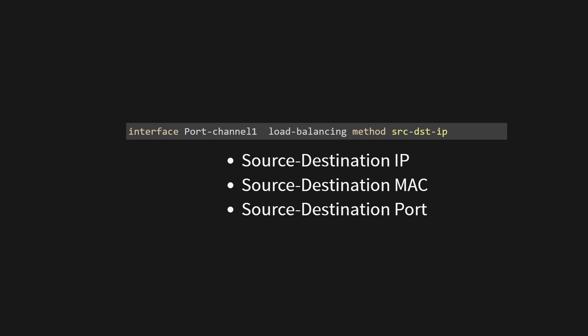Load balancing is a technique used to distribute network traffic evenly across multiple links in a port channel, which helps to achieve better utilization and performance. In this particular configuration, the load balancing method being used is SRCDSTIP. SRC stands for the source address of the traffic — the source IP address of incoming packets is considered when determining which link in the port channel should be used to forward the packet. DST stands for the destination address of the traffic — the destination IP address is also taken into account. IP indicates that load balancing is based on both source and destination IP addresses of the packets.